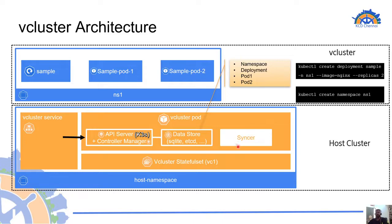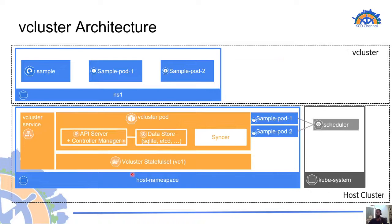vcluster does not use a scheduler from its distributions and only uses the API server and controller manager. The syncer is what really makes vcluster virtual. What the syncer does is watch the vcluster's data store and copy the pods down to the underlying host namespace, talking to the host cluster's API server. So the host cluster scheduler schedules these pods. The networking policies, admission controllers, etc. of the host cluster also apply to these pods. But these restrictions are only at the pod level, because all higher-level objects — things that create pods like Deployments and StatefulSets — stay entirely virtual inside the vcluster's data store and are not synchronized down to the host cluster.